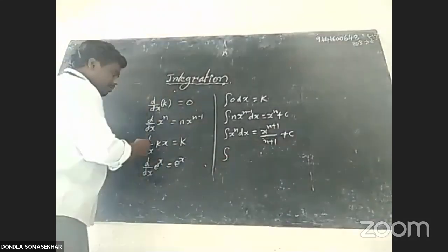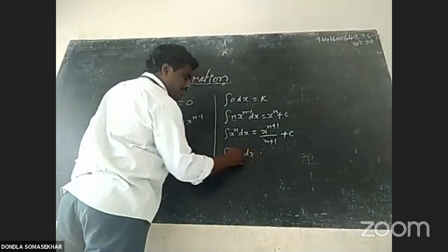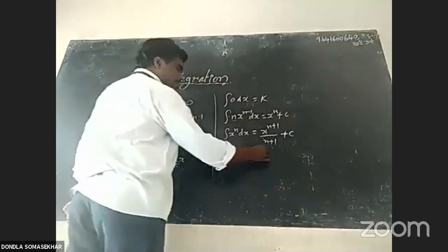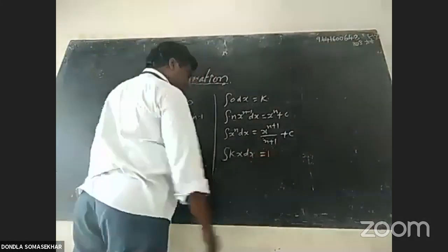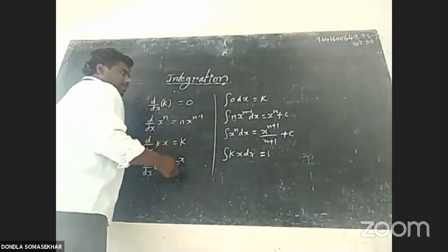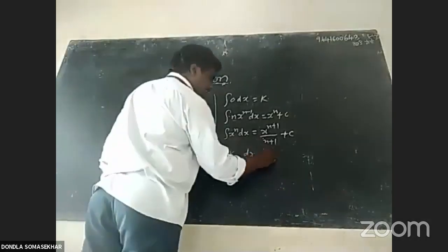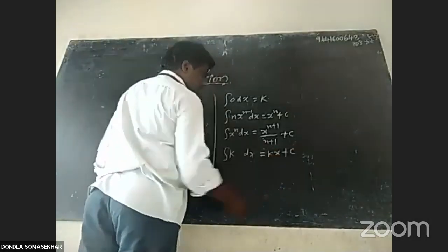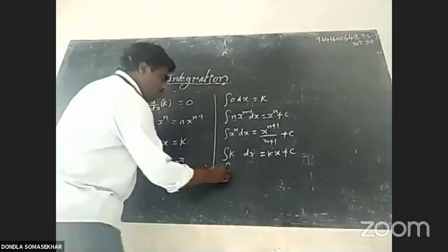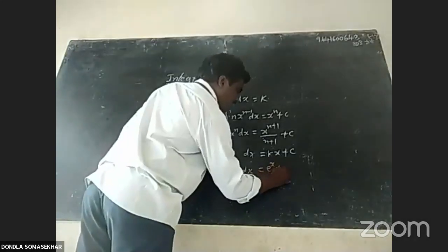Next, integral of kx dx, where k is a constant, gives k times x power n plus c. Integral of e power x dx equals e power x plus c.